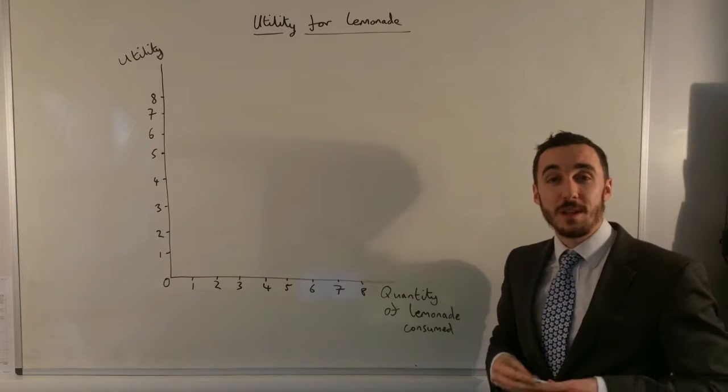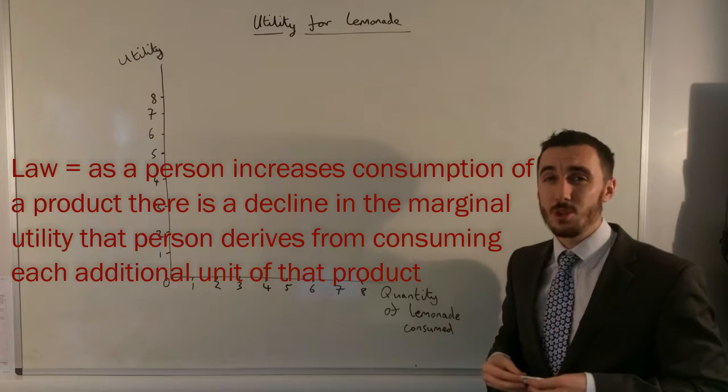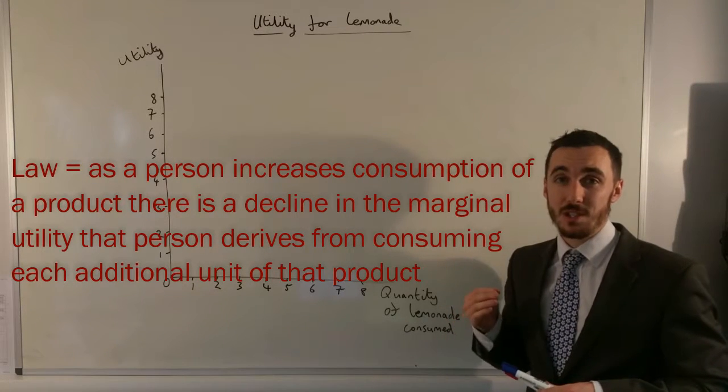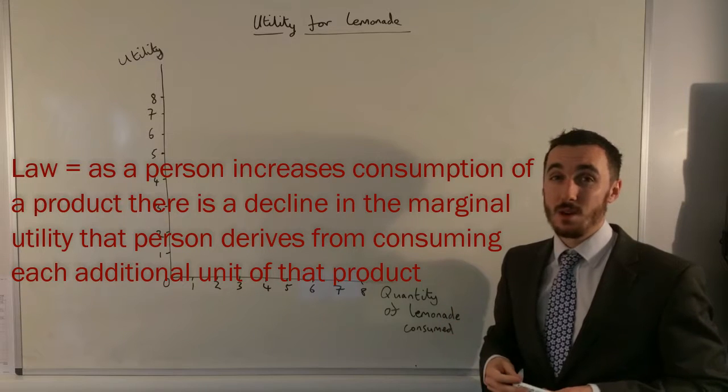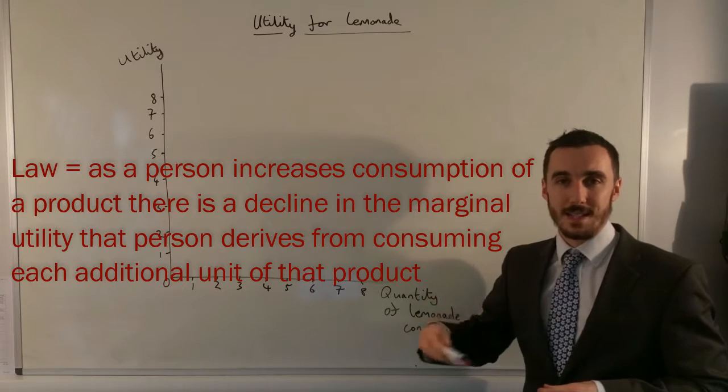The law of diminishing marginal utility states that as a person consumes more and more of a good or service, the satisfaction gained or the utility gained from consuming that good or service declines at each stage.